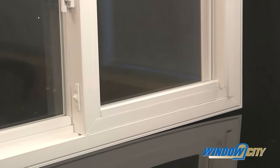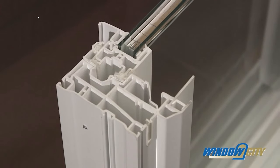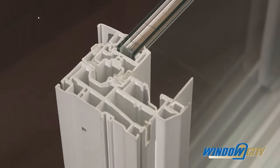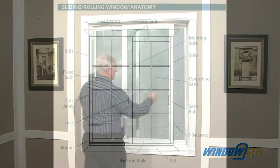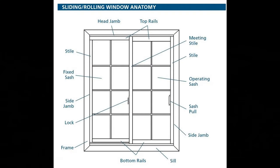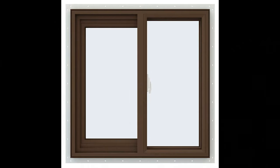The reason the slider is so popular is very simple: it is a very cheap window to produce, easy to install, and takes up the minimal amount of space possible for a window. It is also very easy to operate. The slider window consists of two sashes that slide across each other horizontally — left to right or right to left. In many instances only one sash will slide and the other will be fixed.